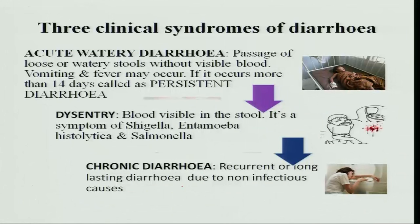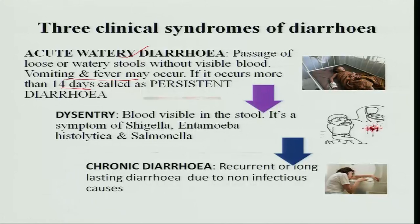There are 3 clinical syndromes of diarrhea. One is acute watery diarrhea, where there is passage of loose and watery stools without any visible blood. Vomiting and fever may also occur. If it occurs for more than 14 days it is called persistent diarrhea, and the person has to be hospitalized and given intravenous fluids.